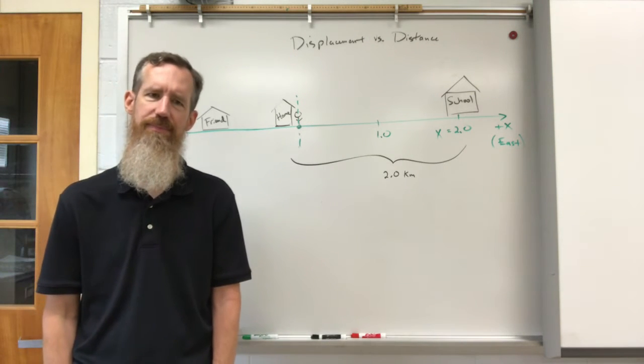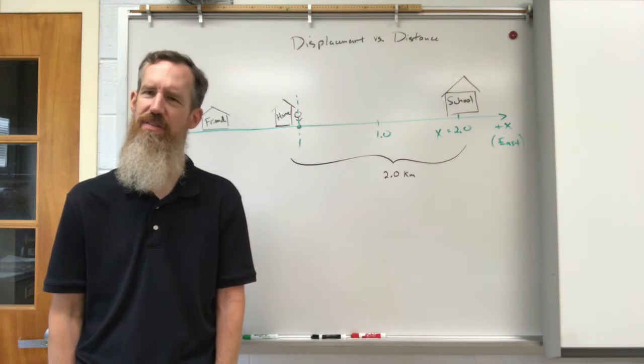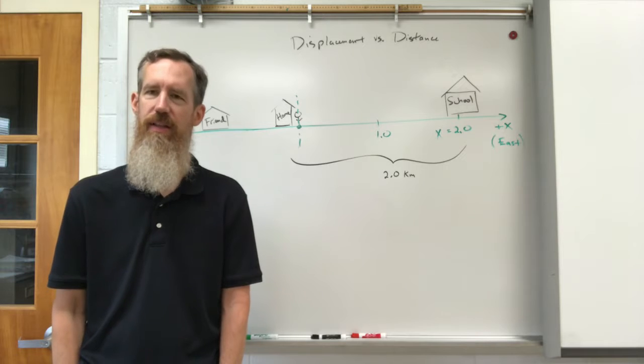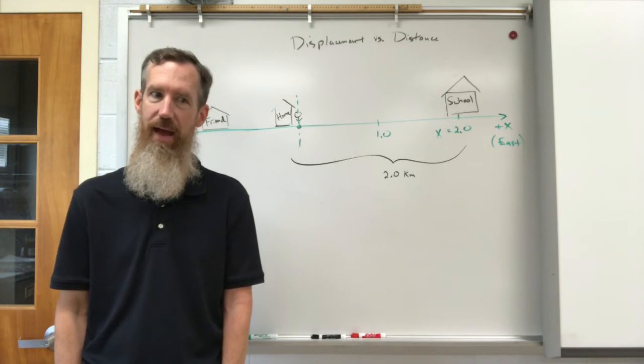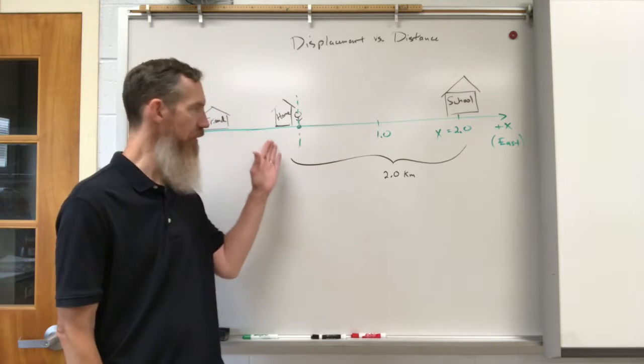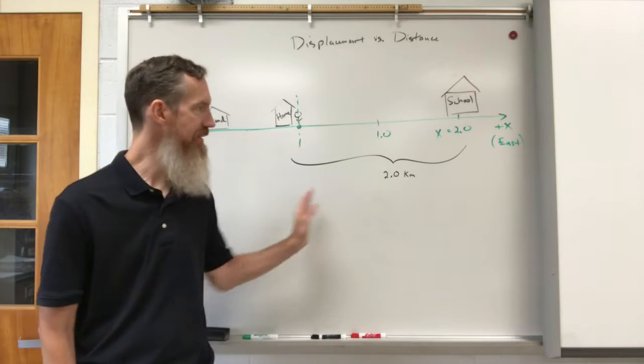All right, let's discuss this difference between displacement and distance just a little bit more to make it crystal clear. Let's say that using our example from before, you're at your house, there's a school, that distance is two kilometers between your house and the school.